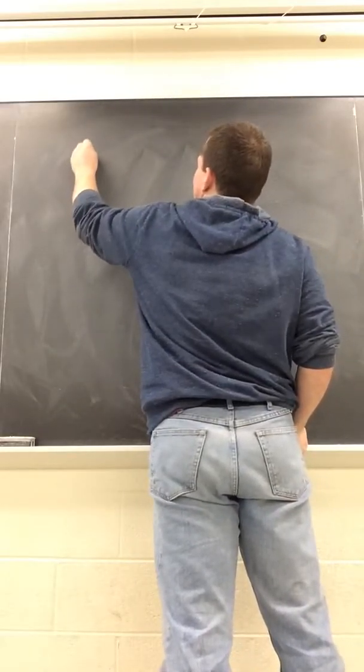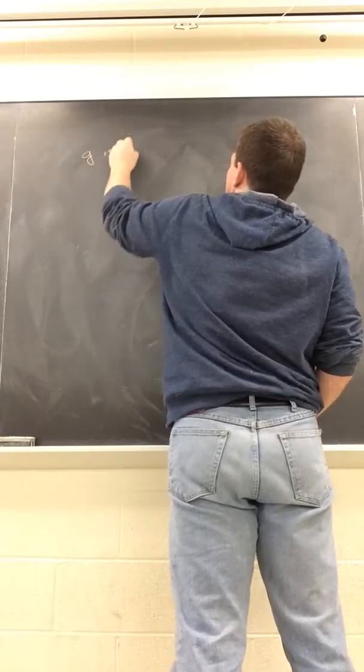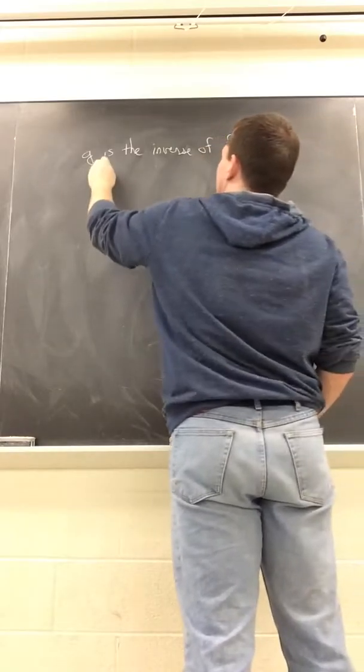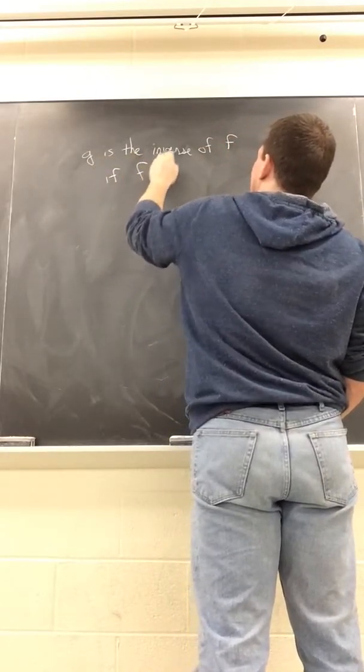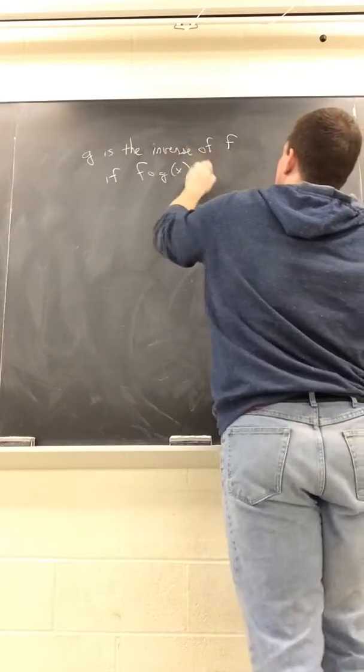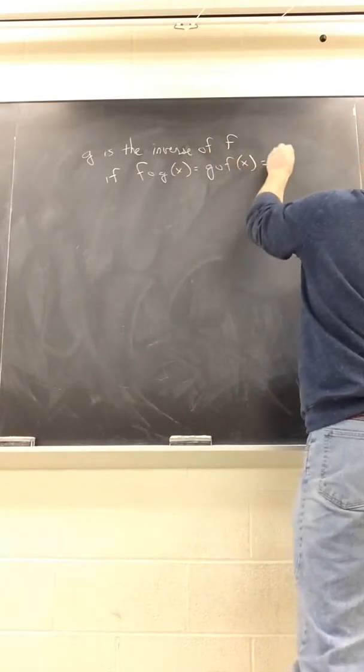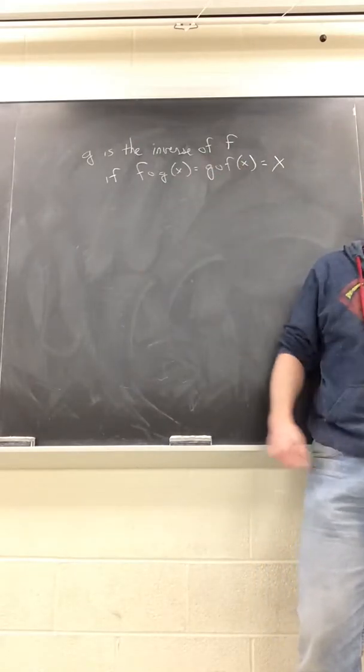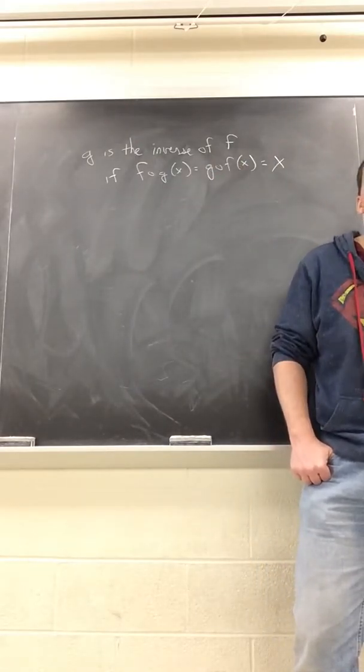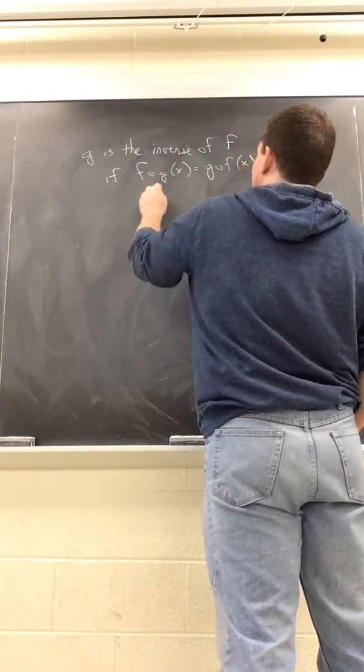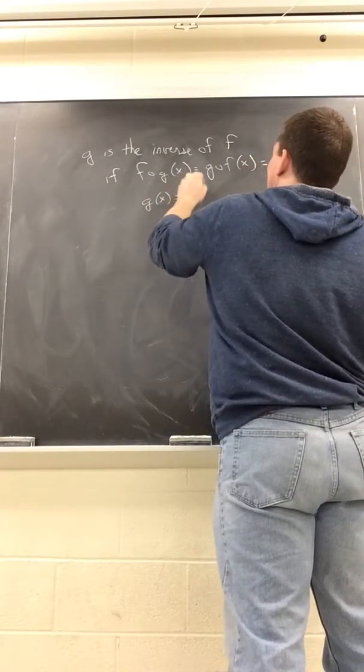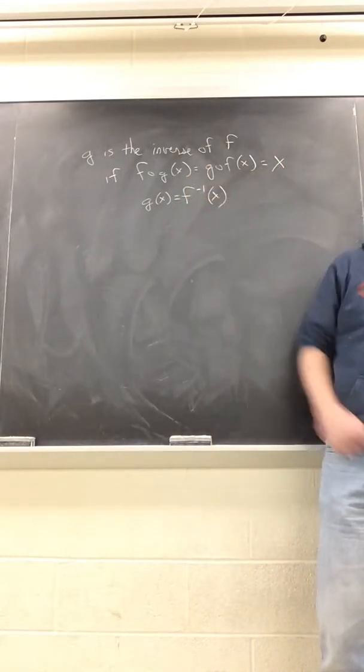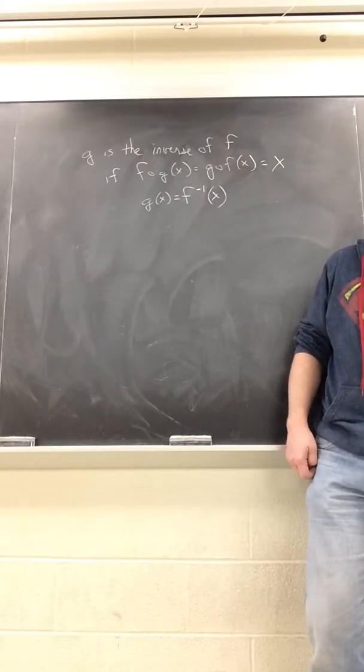So essentially, g is the inverse of f if f circle g of x equals g circle f of x equals x. If that happens, they're inverses. If you get anything other than x, they're not inverses. There's another way to write this: you can also say g(x) equals f raised to the negative one power of x. It's not actually an exponent, it's just a notation we use for inverses, so don't get confused by that.